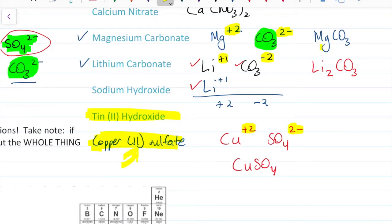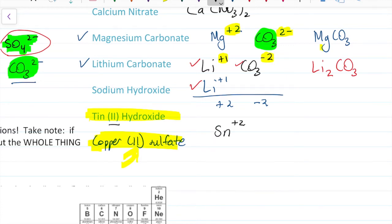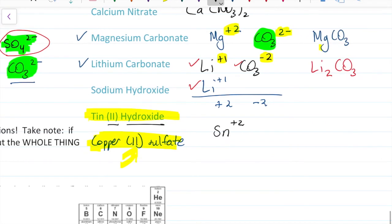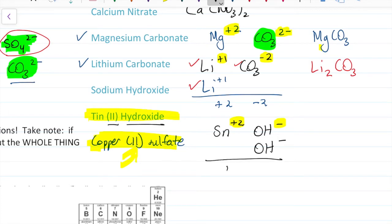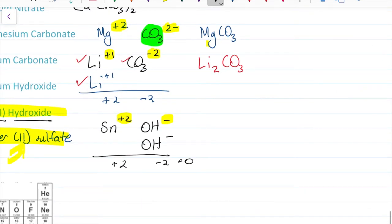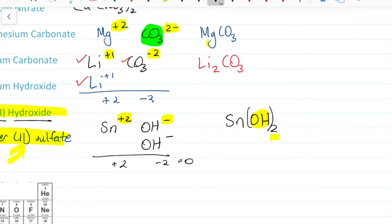Let's write tin(II) hydroxide. Tin is Sn, and we're told the charge is plus two. Hydroxide is OH negative. This one does not balance to zero, so I need another OH negative — now I have two of them. I have one Sn and two OH's. Students want to just write OH2, but that's not two OH's acting as a unit. I put it in parentheses: Sn(OH)2. You only use parentheses if you have more than one polyatomic ion.